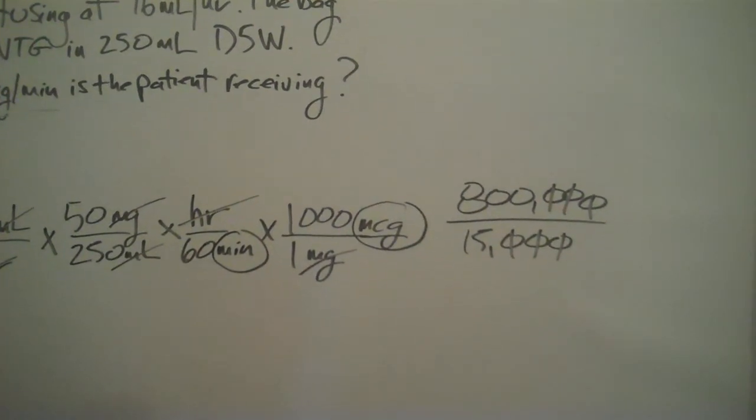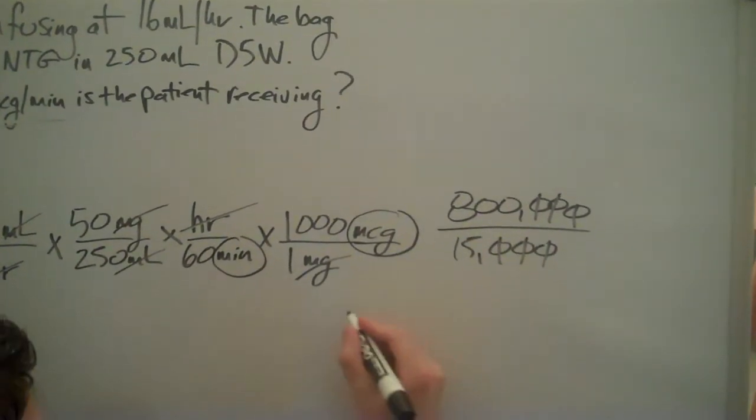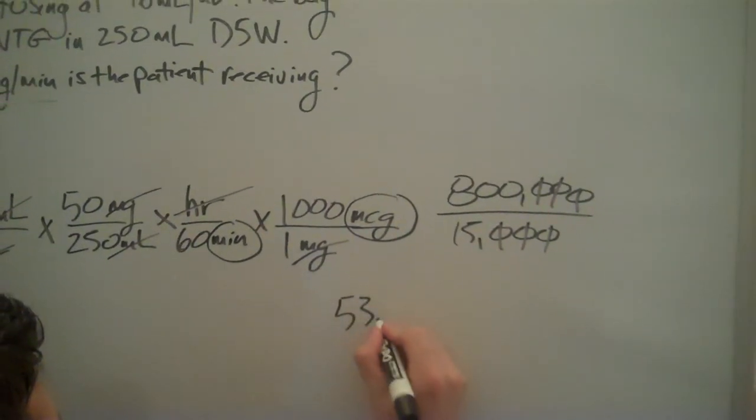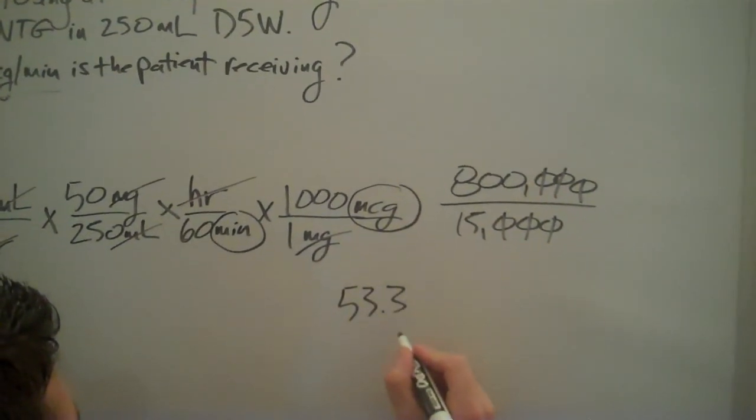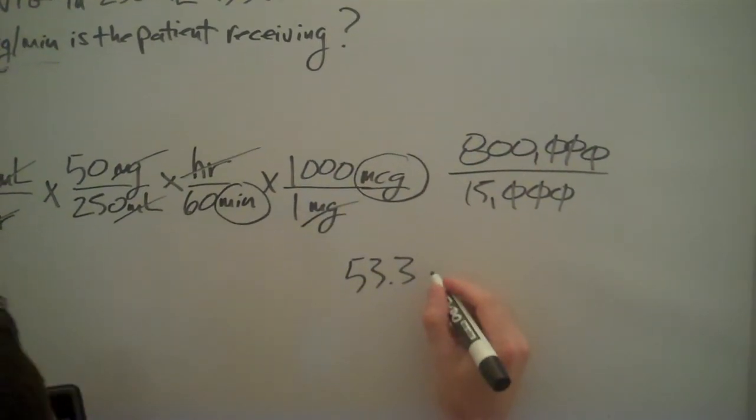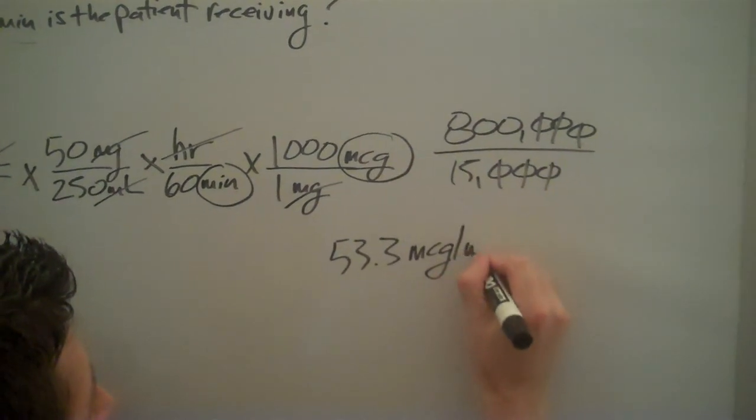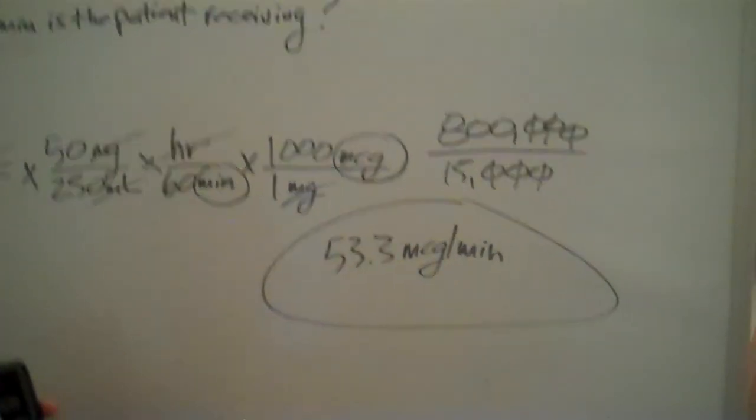So we have 800 divided by 15, and we get the exact same answer. Even though it doesn't always end up that way with dimensional analysis versus ratio and proportion, we do get 53.3 micrograms per minute, and that's our problem.